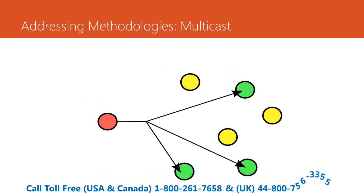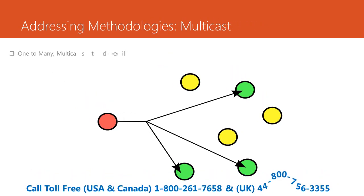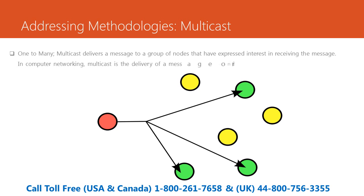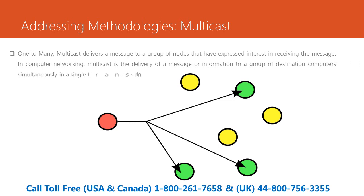The third addressing methodology is multicast — one to many. Multicast delivers a message to a group of nodes that have expressed interest in receiving the message. In computer networking, multicast is the delivery of a message or information to a group of destination computers simultaneously in a single transmission from the source.